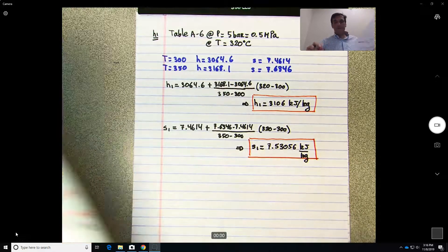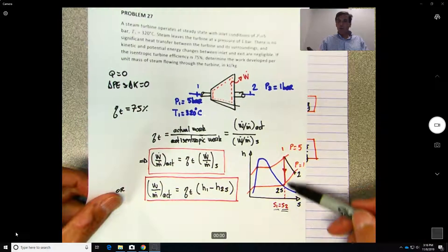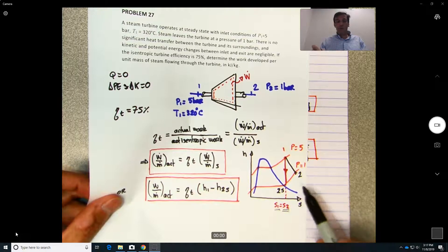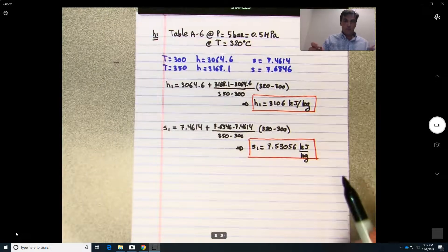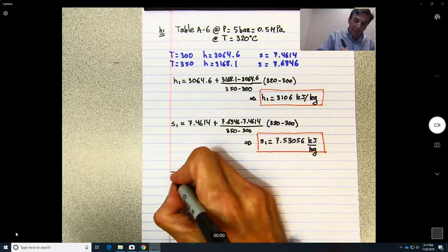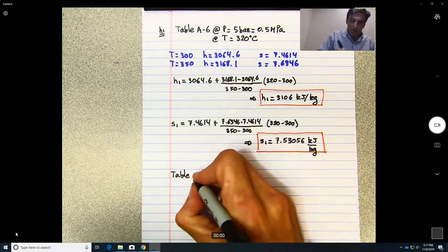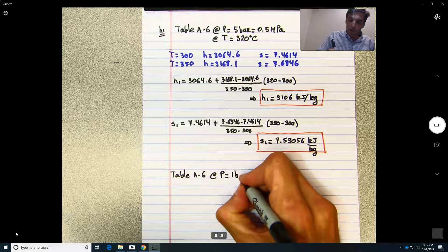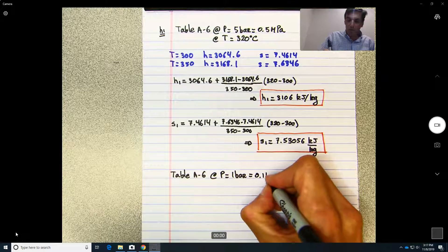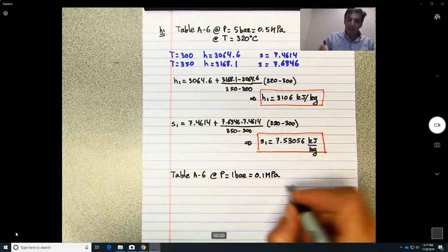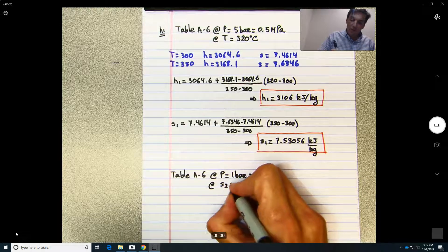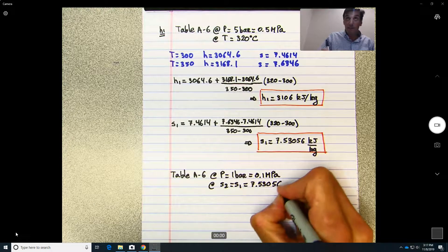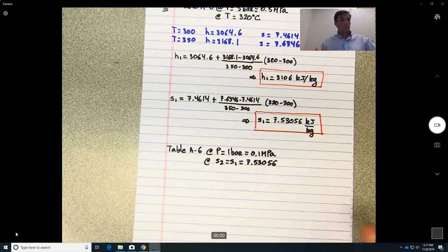So now what do we know? We know that s2 here will be equal to s1, but this time on the pressure line of 1 bar. So basically now we need to go to table h6 again, but this time what do we know? At P equal 1 bar, which will be 0.1 megapascals, and what else do we know? s2 equals s1 equals 7.53056.